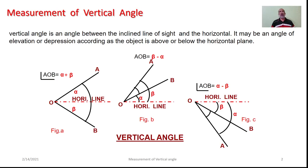As you know, the vertical angle is an angle between the inclined line of sight and the horizontal. It may be an angle of elevation or it may be an angle of depression, according to the object situated above or below the horizontal plane. The sketch A, B, C depicts the various cases of vertical angle.